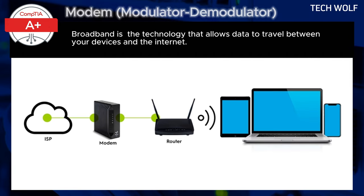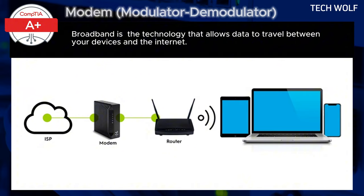Why do ISPs provide broadband but not internet? Broadband refers to the high-speed transmission method used by ISPs to deliver data. The modem is the tool that enables this data to flow, but it is the router that connects your devices to the internet. Broadband allows multiple data streams like videos or downloads to flow simultaneously, ensuring faster, more reliable internet service.